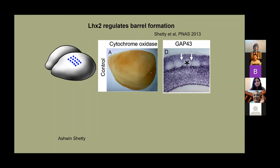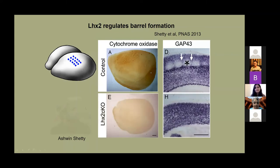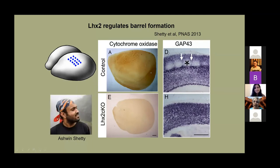These are controls — normal mice to which nothing has been done. I'm summarizing here the work of a wonderful student, Ashwin Shetty, who is now doing a post-doc at Harvard. Ashwin showed that when you knock out the transcription factor LHX2 in the cortex, you lose the barrels — here it is in a flat mount and here it is in section.